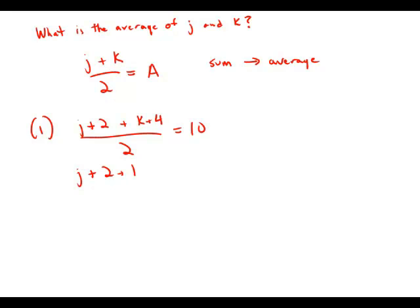Then clearly, j plus two plus k plus four equals 20. This would allow me to solve for the sum of j and k, which would allow me to find the average. So this statement by itself is sufficient.